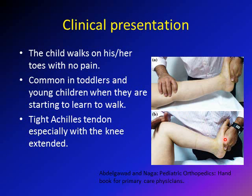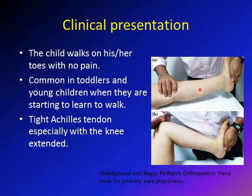So you first flex the knee and then grab the whole foot and do ankle dorsiflexion. You should have about 20 degrees of ankle dorsiflexion with the knee bent. And with the knee extended, you should have about 10 degrees of ankle dorsiflexion. So if you have a tight Achilles tendon, that will cause decreased ankle dorsiflexion, especially with the knee extended.